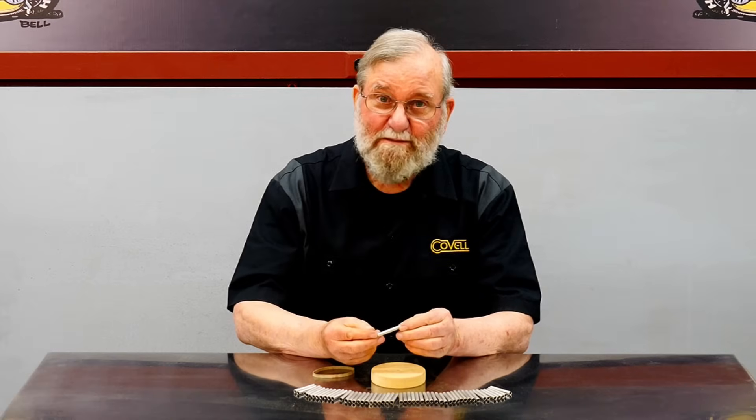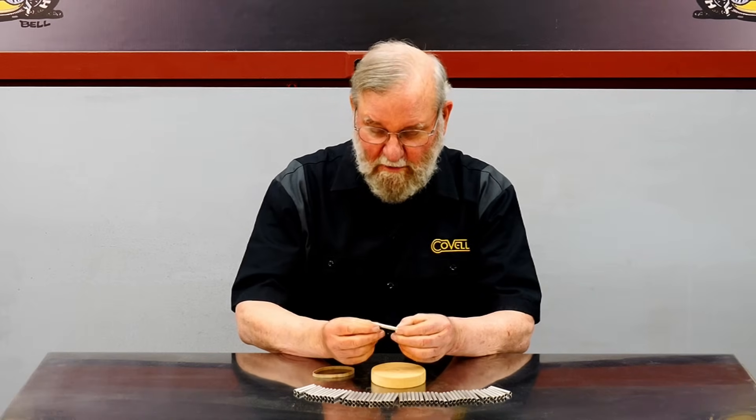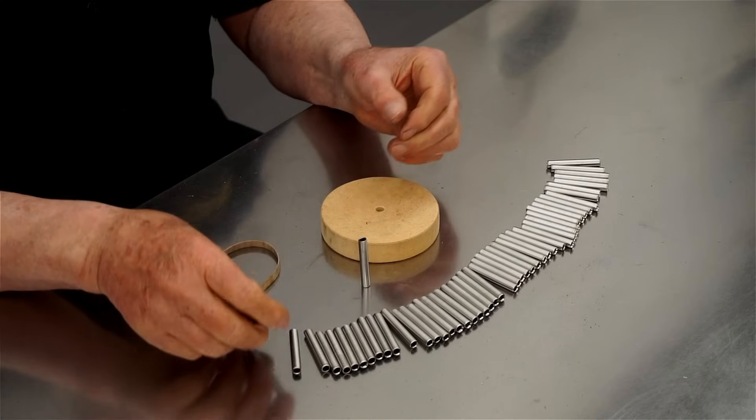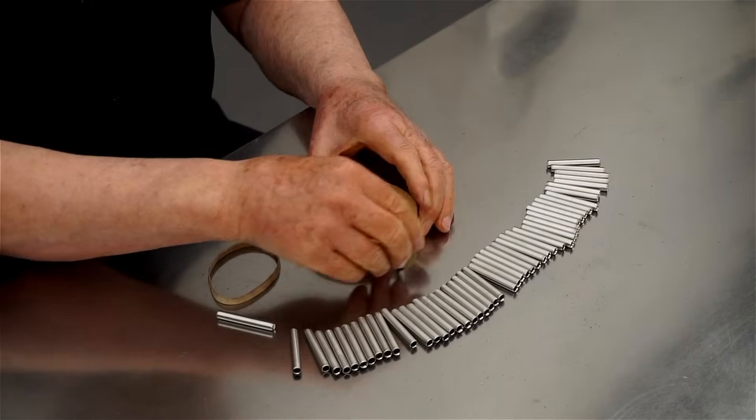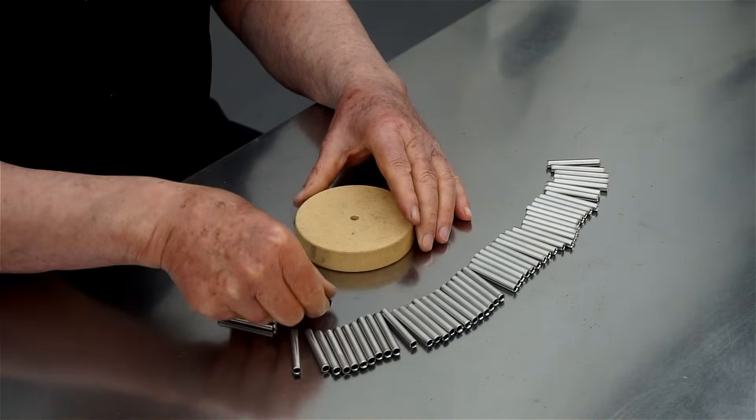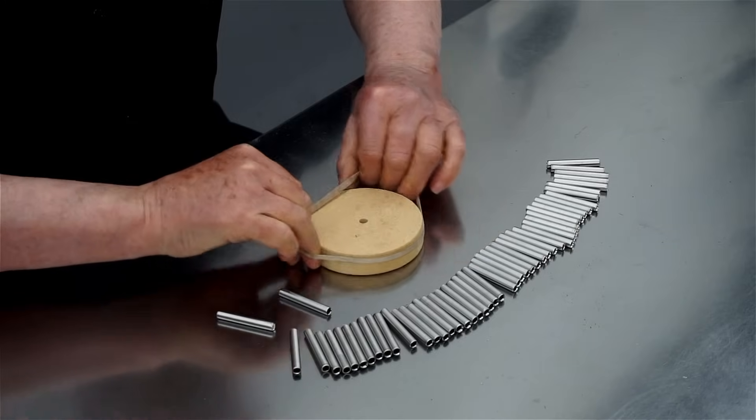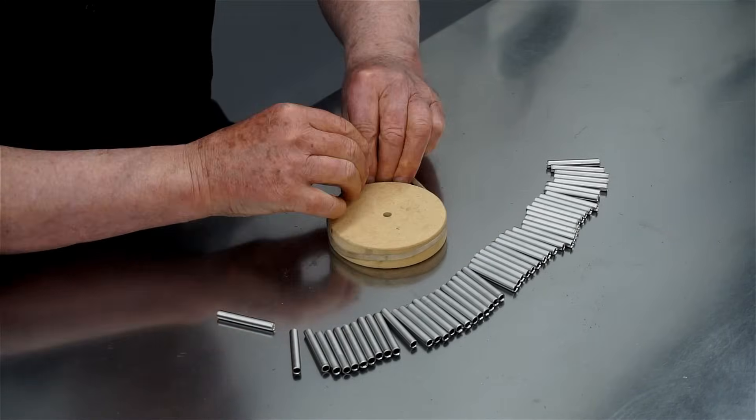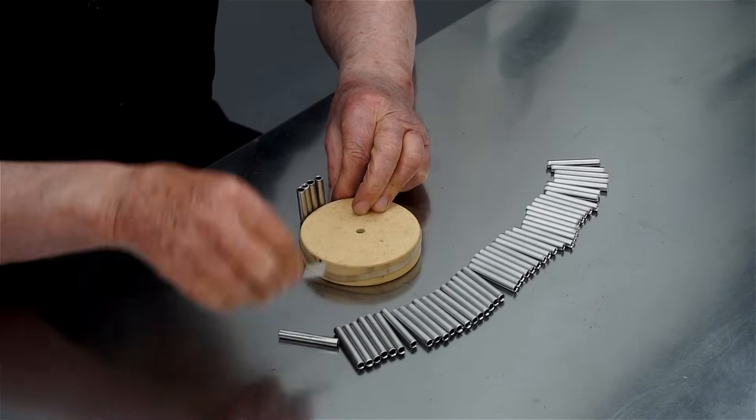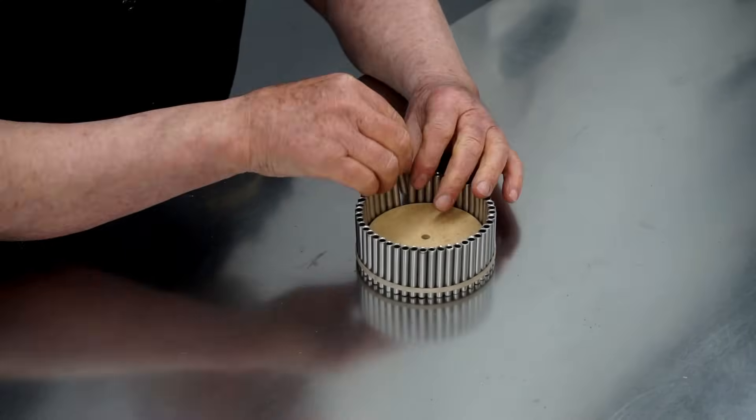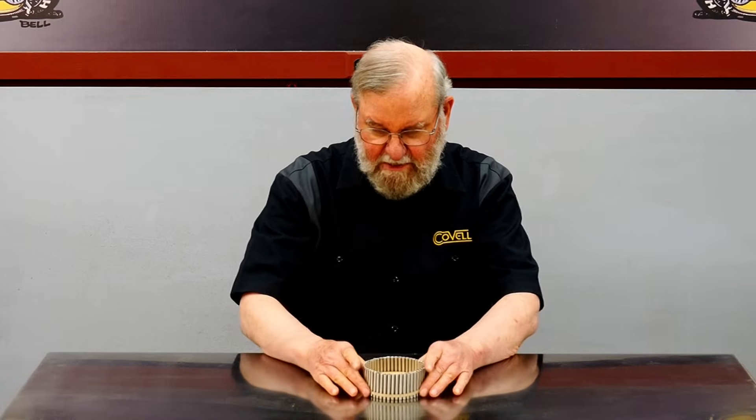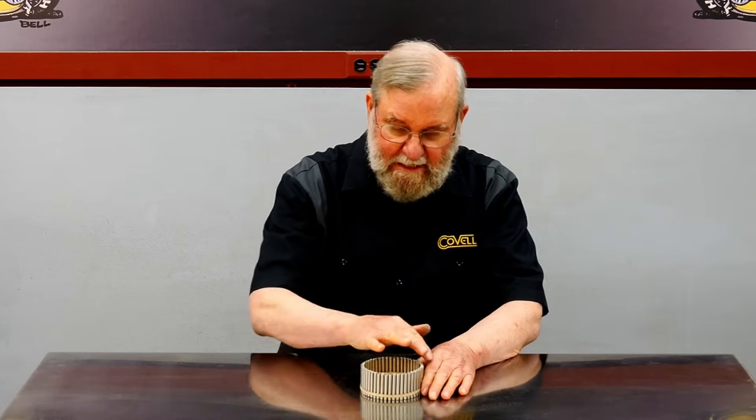Now that all the tubes are cut, I have to hold them in the proper arrangement. They don't stand up very well by themselves. So what I've done is to turn a disc on a lathe that's just the right diameter, and I'll use a rubber band to hold the tubes in place. So that's the orientation for the tubes, and now I can make the caps that fit on the top and the bottom.